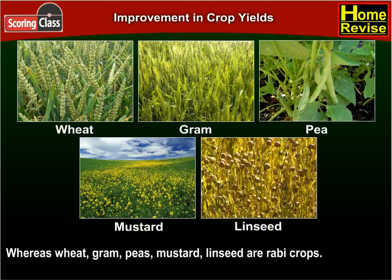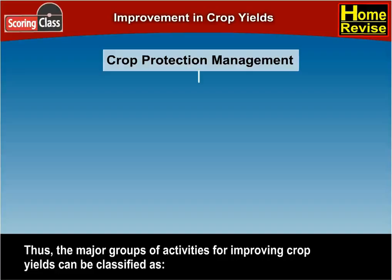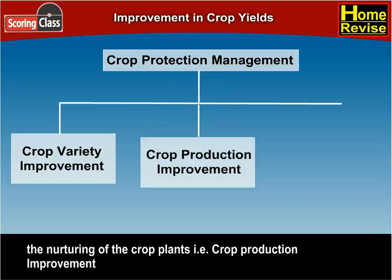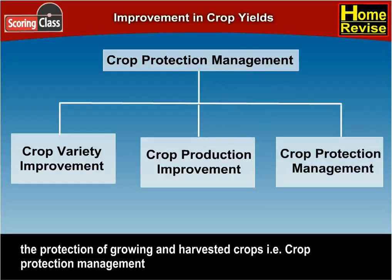The major groups of activities for improving crop yields can be classified as: first, choice of seeds for planting, that is crop variety improvement; second, the nurturing of the crop plants, that is crop production improvement; and third, the protection of growing and harvested crops, that is crop protection management. Let's have a look at these in detail.